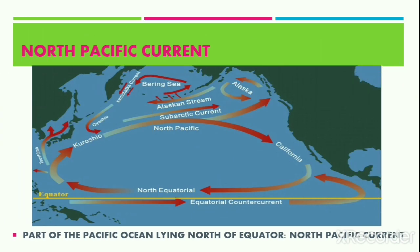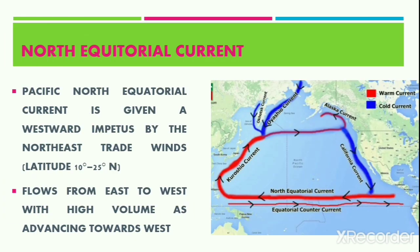The part of the Pacific Ocean lying to the north of the equator is termed the North Pacific Ocean, and hence the currents in the northern part of the Pacific Ocean are termed the North Pacific currents. In the Pacific Ocean, between approximately 10 degrees to 25 degrees north of the equator, the trade winds generate the North Equatorial Current.